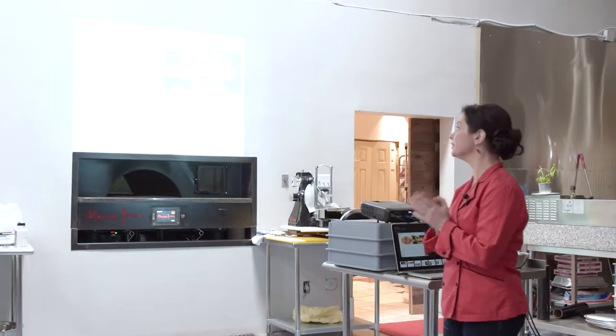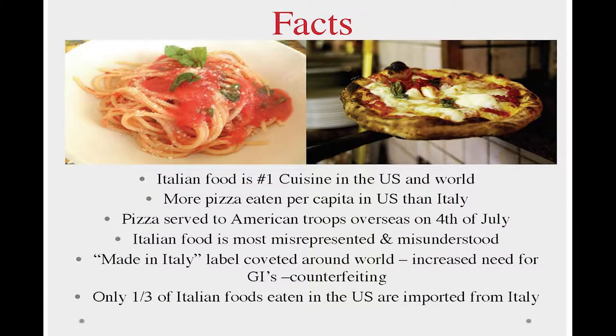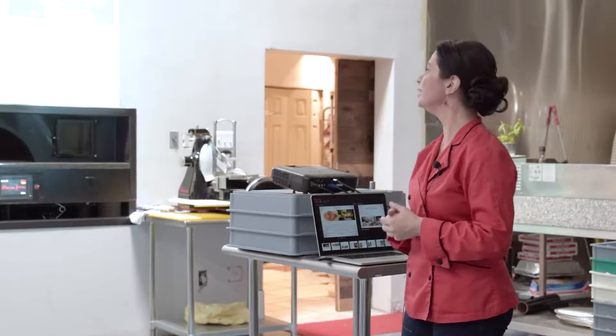But the first thing I wanted to do is to start out with some facts. So Italian food is now currently the number one cuisine in the United States and the number one cuisine in the world. And believe it or not, more Americans eat more pizza per person than we do in Italy nowadays. And pizza is even served to the American troops a lot of times on July 4th at different places that they're stationed. So it's an emblem of Napoli, an emblem of the Italian culture, but it's also become very important in the American culture.